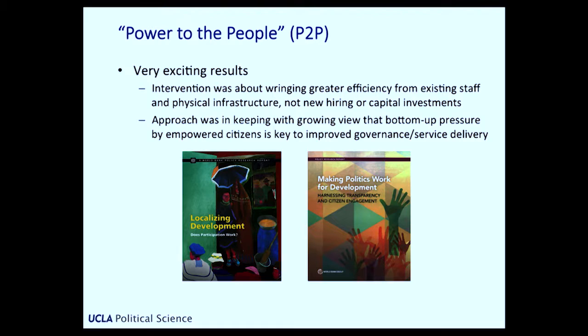Enormous results — very exciting to the policy community for two reasons. First, it's rare that health interventions of any kind have these kinds of effects. But more importantly, the intervention wasn't about spending more money. It wasn't about buying new ambulances or building clinics or training doctors and nurses or buying equipment. It was about bringing more efficiency out of the existing physical and human infrastructure. From the standpoint of donors who want to affect big change without spending huge amounts of money, and of developing country governments, that was an incredibly exciting thing to show. The second reason it was exciting was because this approach — premised on the idea that you could mobilize people from the bottom up to exert pressure on health care providers to affect change — was very much in keeping with a move in development circles away from top-down interventions toward bottom-up interventions.